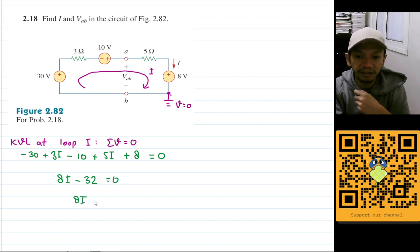So we'll have 8I is equal to 32, so I is 32 divided by 8, and that will be 4. So I is 4 amperes. This is our first result.